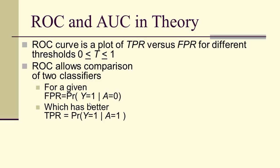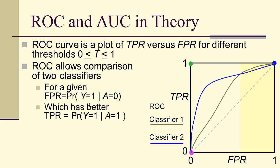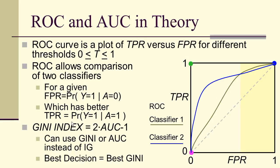The ROC allows us to compare two classifiers: for a given false positive rate, which has the better true positive rate? The classifiers can cross, so one may be better in some regions and the other better elsewhere. However, the area under the curve is a measure of overall classifier quality. In fact, the Gini index — two times the area under the curve minus one — is often used to determine the best decision, choosing the split that increases the area under the curve the most.